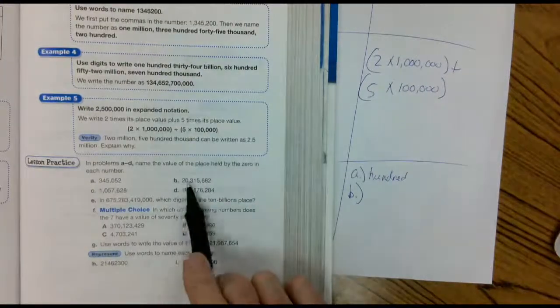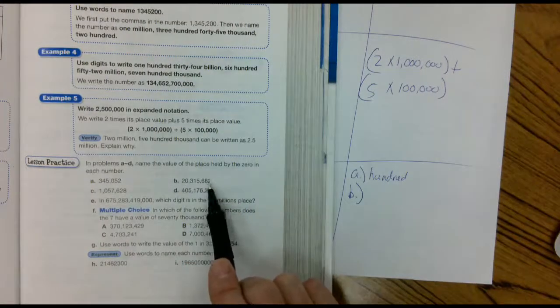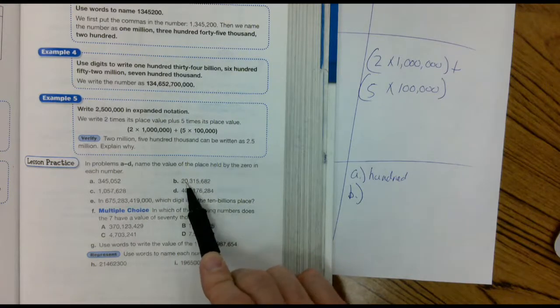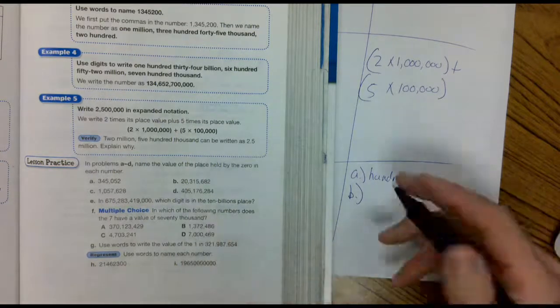B. The zero is way up here. Say it with me. Ones, tens, hundreds. One thousand, ten thousand, hundred thousand. The zero is in the millions place.